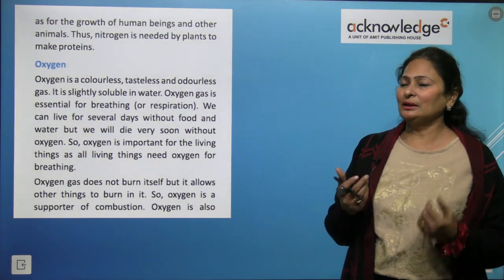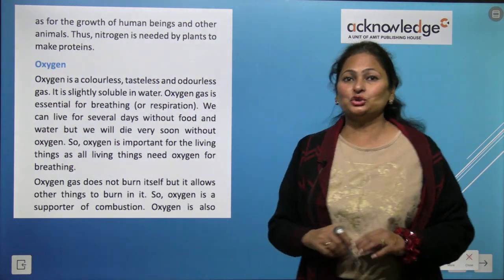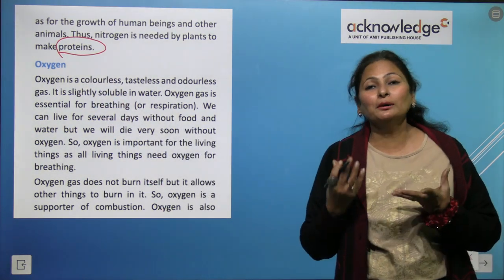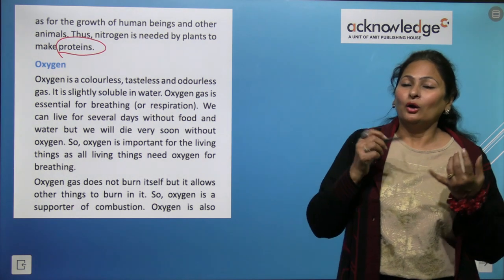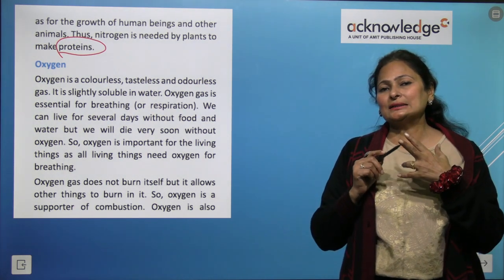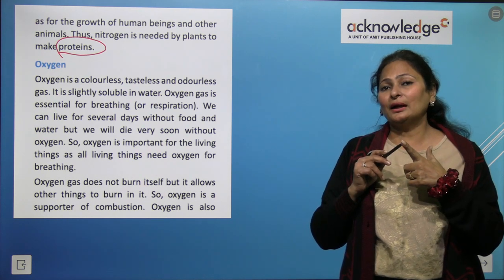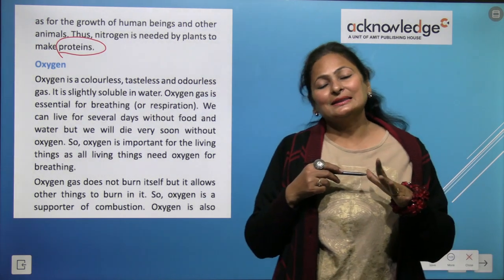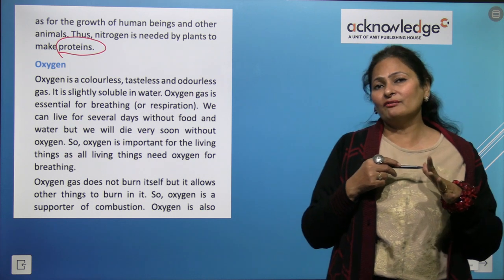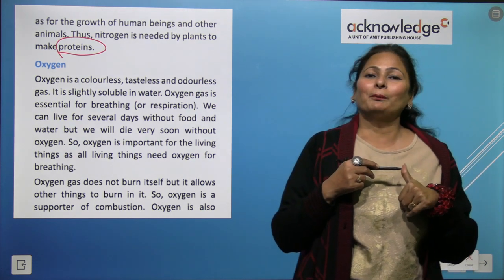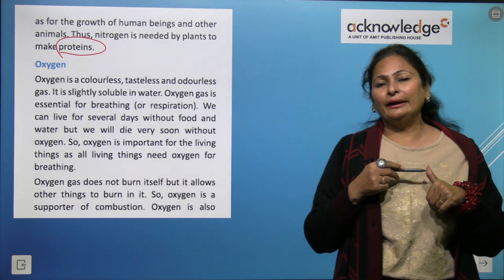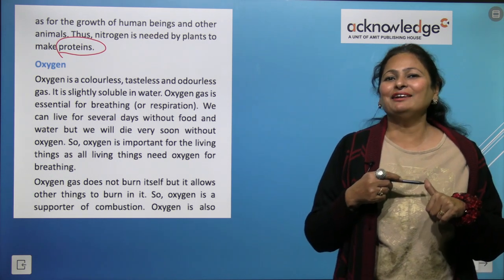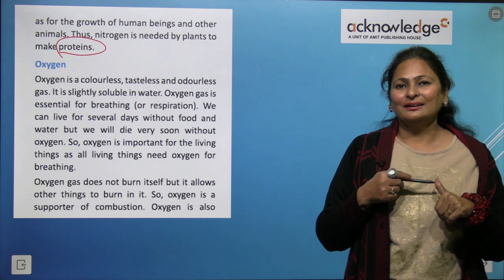Plants make protein using nitrogen, and these proteins are used for the growth of plants as well as for human beings and animals. When we consume vegetables and food items from plants, we get this protein. So nitrogen is needed by plants to make protein — this is very important.